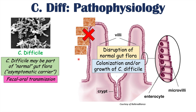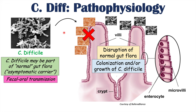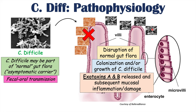C. difficile then either colonizes or starts to grow in patients who already have it, outcompeting normal gut flora that have died off from antibiotic use. Because normal gut flora keeps bad bacteria in check, that disruption allows C. difficile to multiply and grow even more. These growing populations of C. difficile then start to release exotoxins named exotoxin A and B. These exotoxins lead to subsequent mucosal inflammation and damage within the gastrointestinal tract, causing the signs and symptoms we'll discuss next.